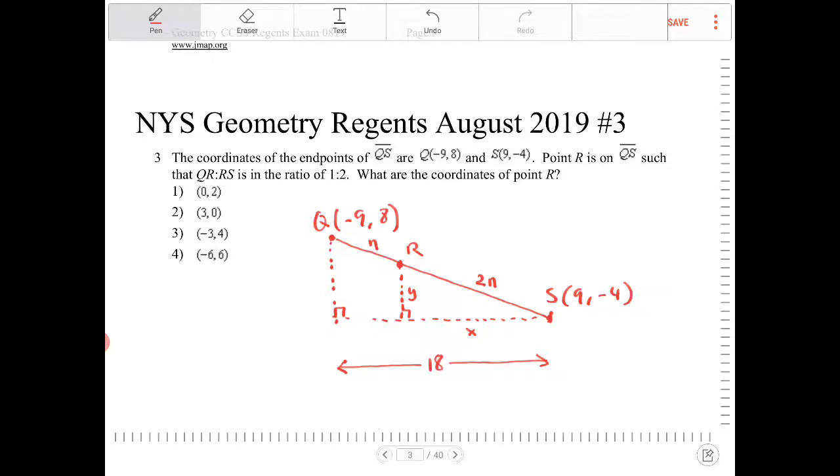What about the vertical component? If I take 8 and subtract by negative 4, I'm going to get 12. So vertically here, I have 12.